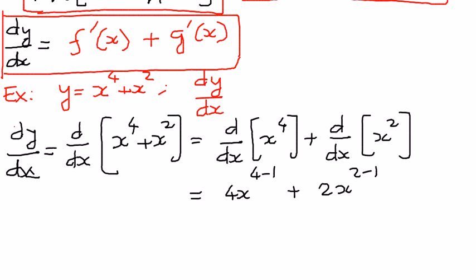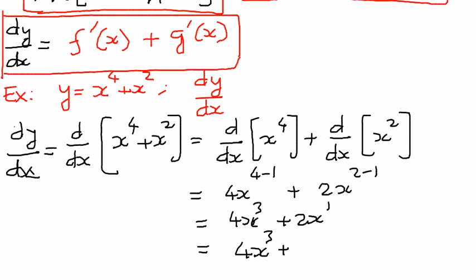So therefore, when we simplify this, this is going to come out as 4x to the power of 3, plus 2x to the power of 1. We can further simplify this as 4x cubed plus 2x. That is where we want to leave it — this is the derivative of the given function x to the power of 4 plus x to the power of 2.